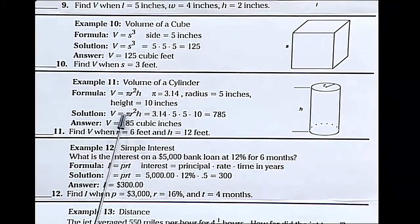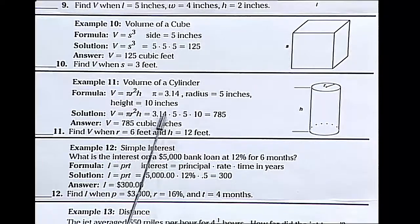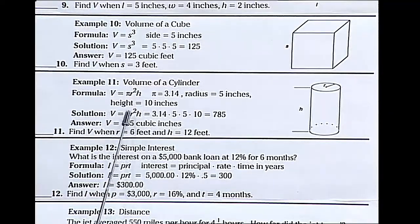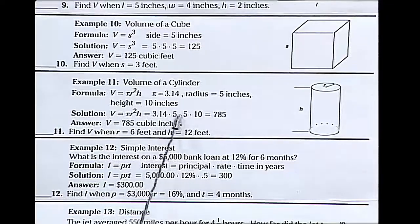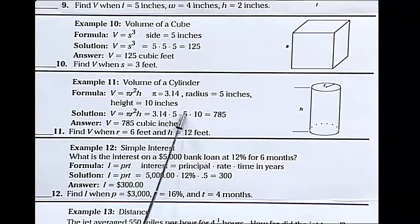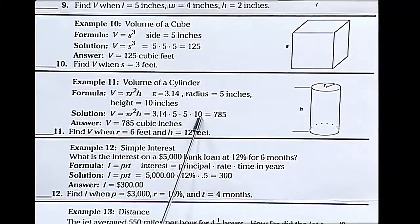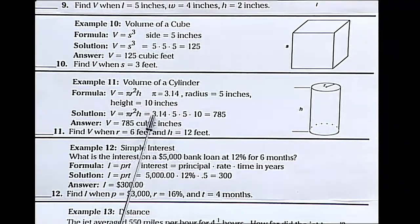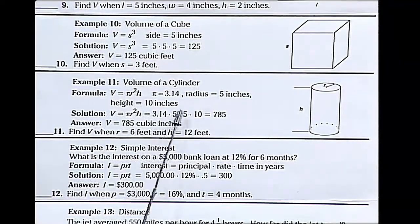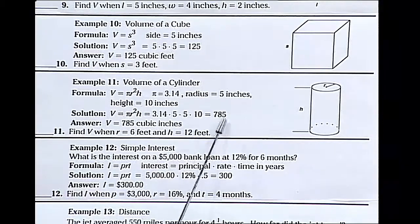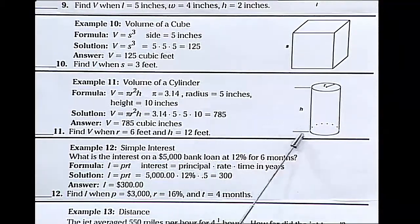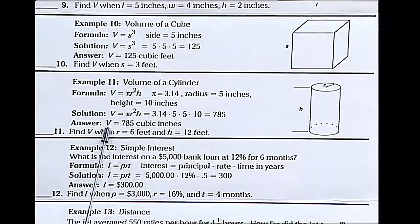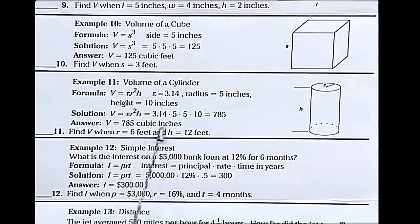To substitute in, I would have to do 3.14 for pi, radius squared - the radius is 5, 5 times 5 is 5 squared, and the height is 10. When I multiply 3.14 times 5 times 5 times 10, I get 785. It's a three-dimensional object, so it's 785 cubic inches.